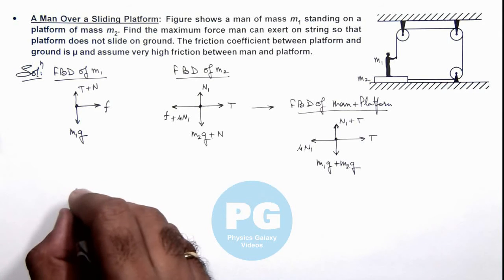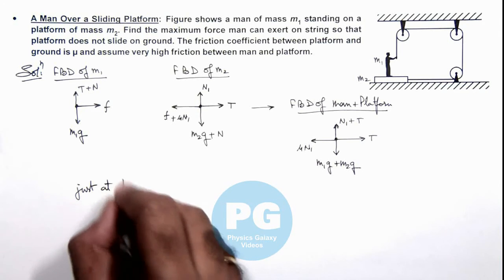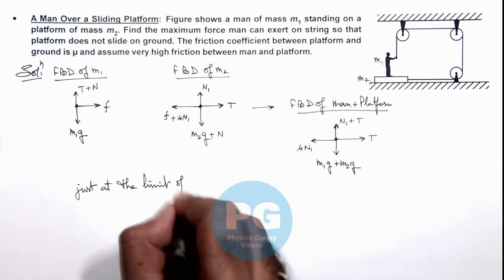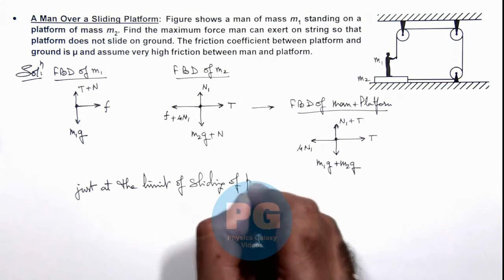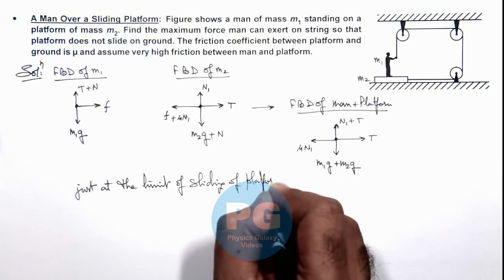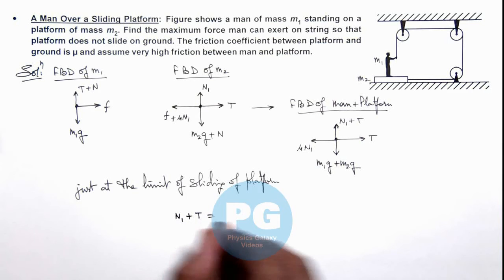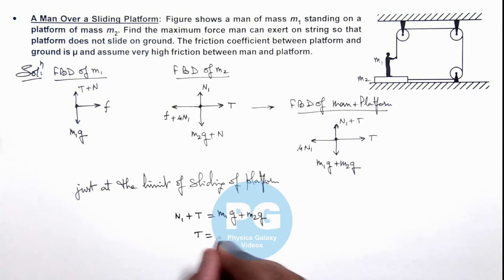Just at the limit of sliding of the platform, we can write N1 + T = m1g + m2g, and the value of T = μN1.